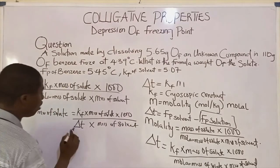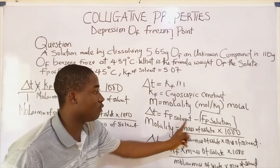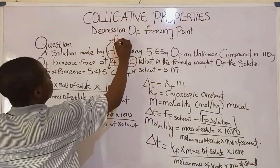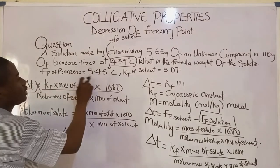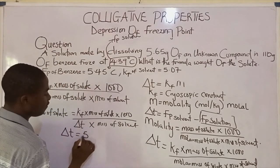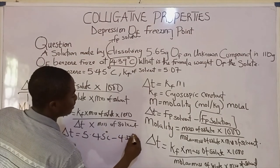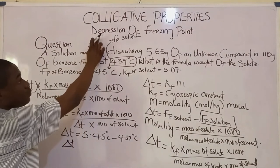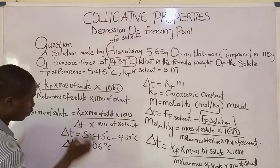Benzene is the solvent. Delta t is not directly given, so we calculate it. Recall delta t equals freezing point of solvent minus freezing point of solution. The freezing point of the solution is 4.39 degrees Celsius, and the freezing point of benzene is 5.45 degrees Celsius. So delta t equals 5.45 minus 4.39 equals 1.06 degrees Celsius. The freezing point of solvent is always higher than the freezing point of solution.